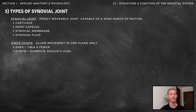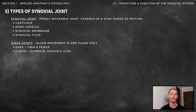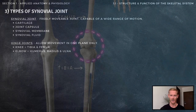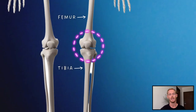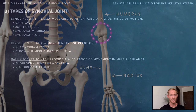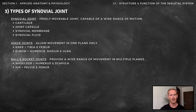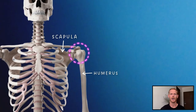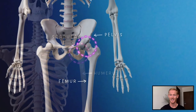The two types of synovial joints you need to know are hinge joints and ball and socket joints. Hinge joints allow movement in one plane only; examples include the knee and elbow, which are only capable of flexion and extension. The articulating bones at the knee are the femur and the tibia, and at the elbow, the humerus, radius, and ulna. Ball and socket joints allow for a wide range of movement in multiple planes, and include the shoulder and hip joints. The articulating bones at the shoulder are the humerus and scapula, and at the hip, the pelvis and femur.